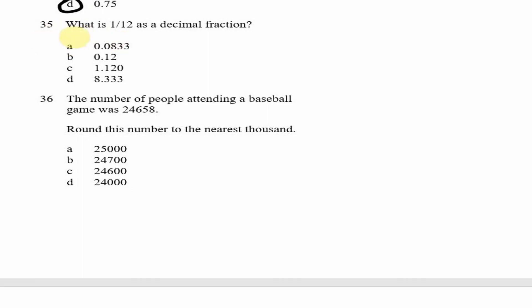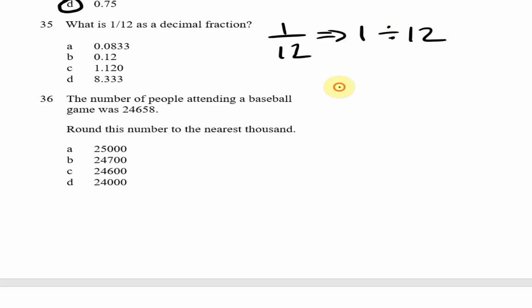Looking at question 35: what is one twelfth as a decimal fraction? This is similar to the previous question. We find 1 divided by 12 using long division. 12 into 1 goes 0 times; adding a decimal point and zero, 12 into 10 goes 0 times.